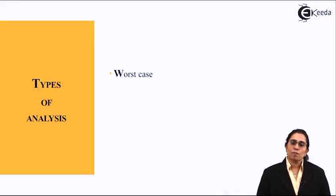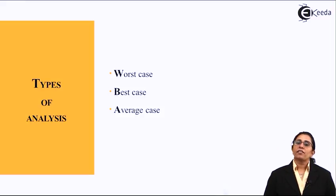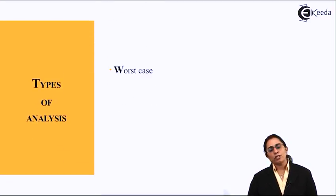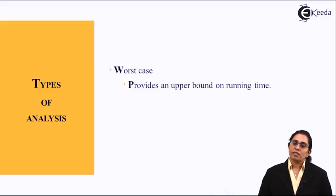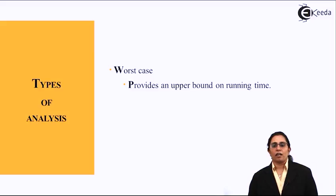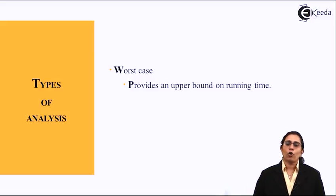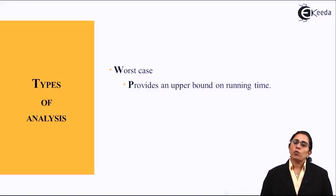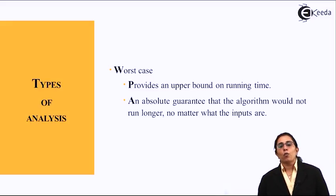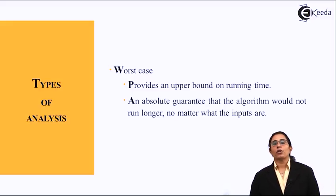The various types of analysis we do on an algorithm are worst case, best case, and average case analysis. The worst case analysis provides an upper bound on the running time — it takes the largest amount of time for any input data to produce a described output. It is an absolute guarantee that the algorithm will not run longer than this, no matter what the inputs are.